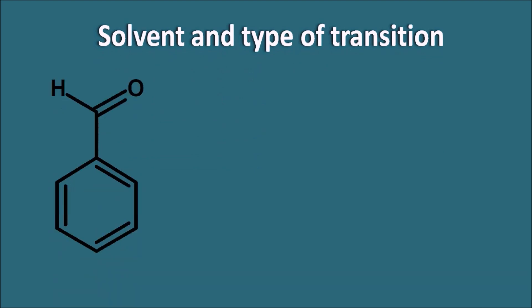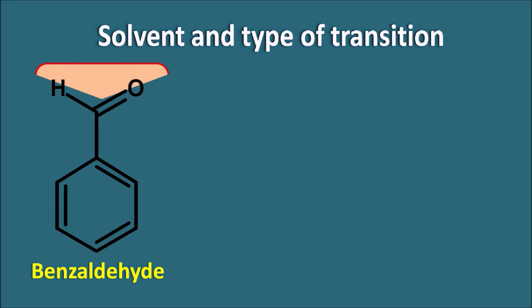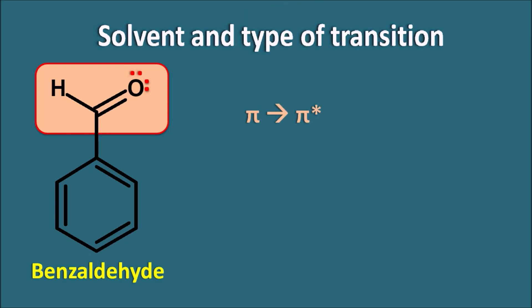Let us take one compound like benzaldehyde. Benzaldehyde acts as a strong chromophore because of the pi bonds, and we can also observe an aldehyde functional group, so it can have pi electrons as well as the oxygen having the lone pair of electrons. So benzaldehyde can undergo mainly two types of transition in UV-visible spectroscopy: pi to pi* transition as well as n to pi* transition.